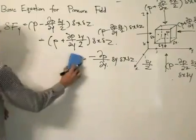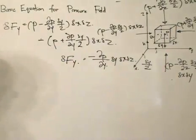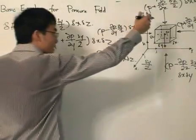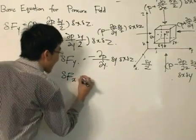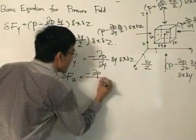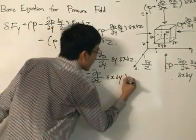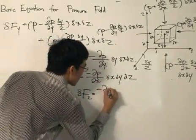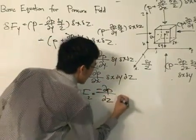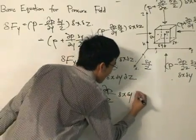This quantity is basically a small force acting in the y direction. Now if we want to do the same for the x and z directions: the small force in the x direction is minus partial p over partial x multiplied by delta x, delta y, delta z; and in the z direction it's minus partial p over partial z times delta x, delta y, delta z.